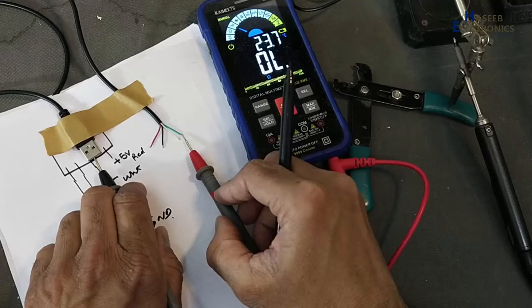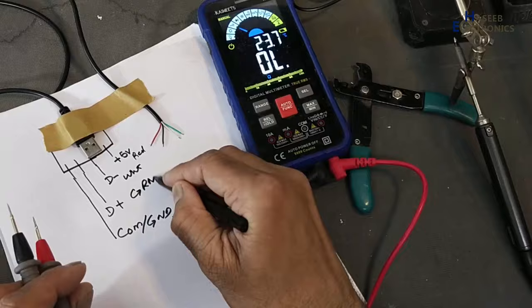Then D positive, that is green. And the last wire, black.